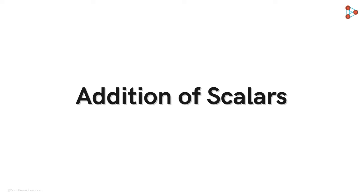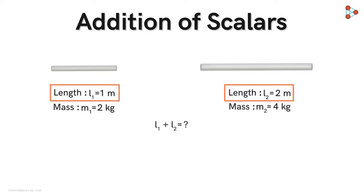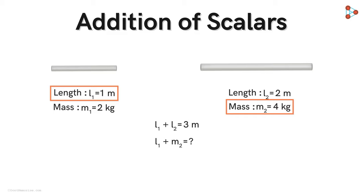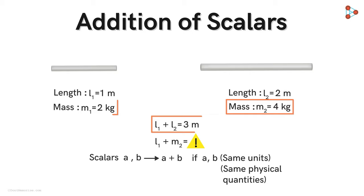Suppose we have two rods with their respective length and mass. Can you tell me what will be the sum of the length of the two rods? It's easy — it will be 3 meters. But what if I ask you to add the length of the first rod with the mass of the second rod? Does it make sense? No. We know that to add two scalars, they should have the same unit — that is, they should represent the same physical quantity. We can add length with another length only, and mass with another mass only, but not a length with a mass.